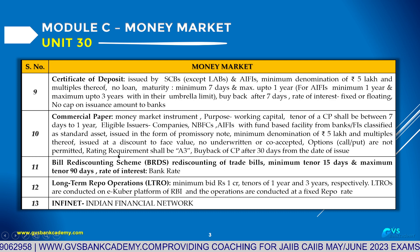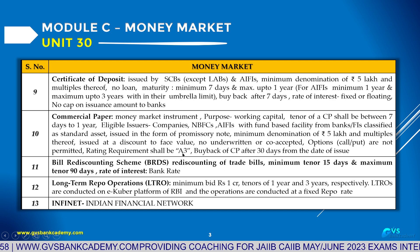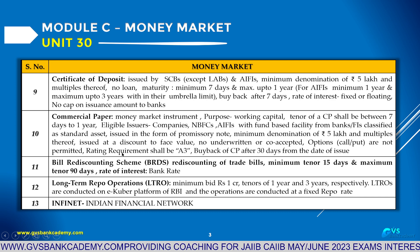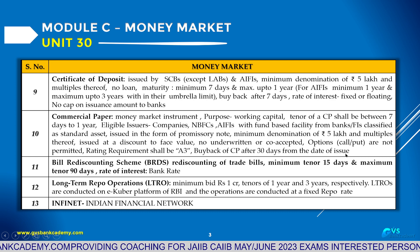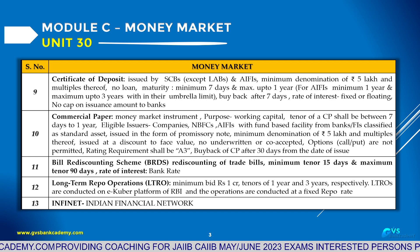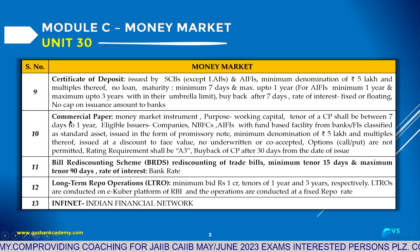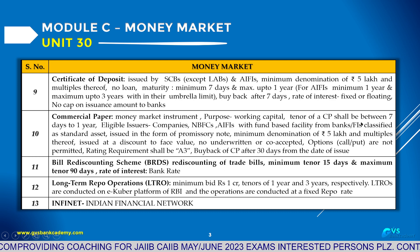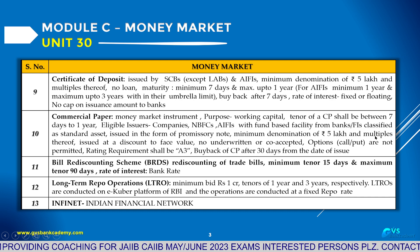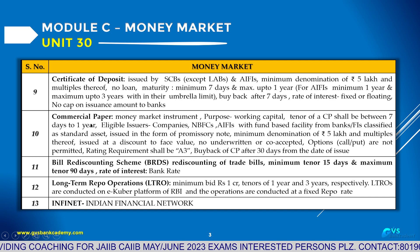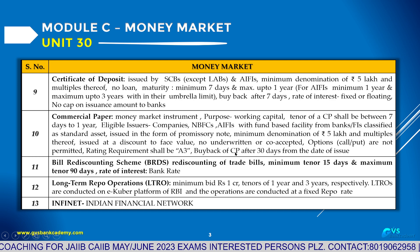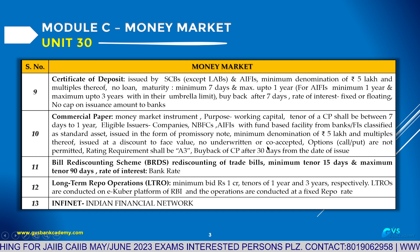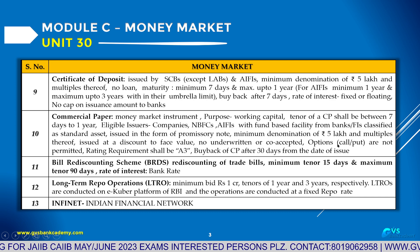In the issue of commercial paper, no underwriting, no co-acceptance, no put option, and no call option are permitted. The minimum credit rating required is A3 from an external credit rating agency. Buyback of commercial paper is allowed after 30 days from the date of issue.